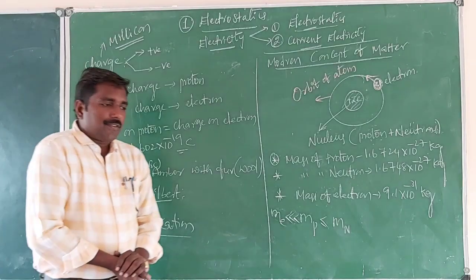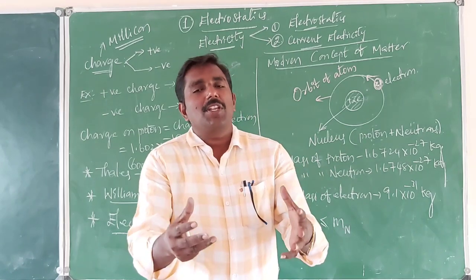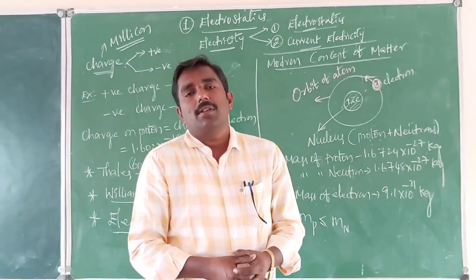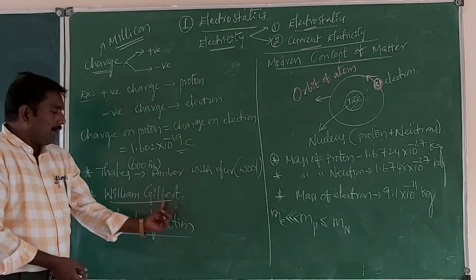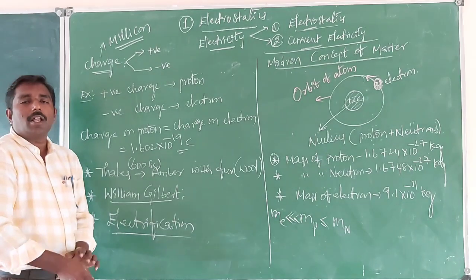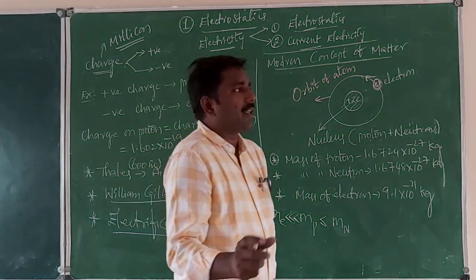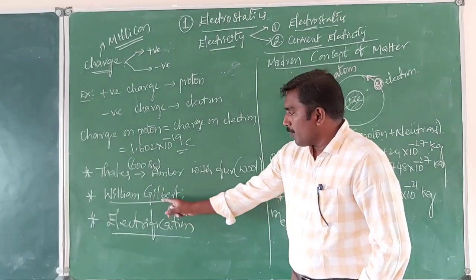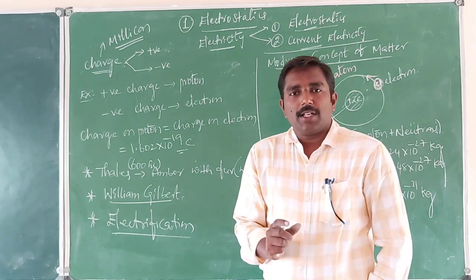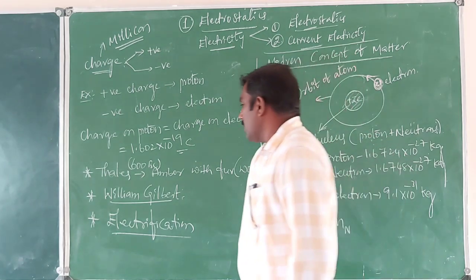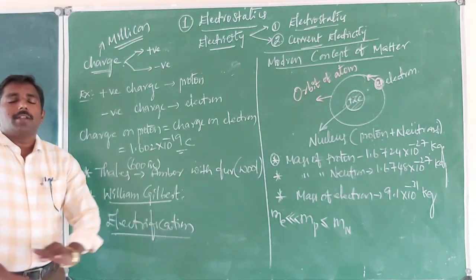Then William Gilbert made a systematic study of this phenomenon and found that some more objects also exhibit electrification — they attract each other after rubbing. The process of charging a body is called electrification. William Gilbert showed that there are two kinds of charges in nature: positive charge and negative charge.